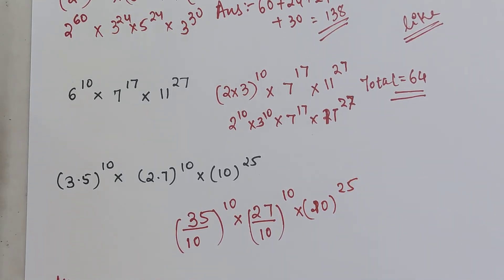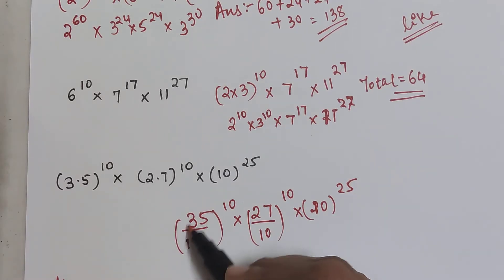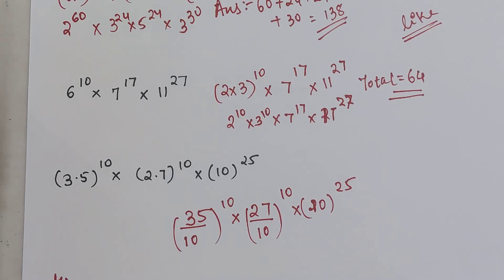So now here please understand, if you want to cancel you can cancel, but it will lead to some negative indices as well. Why am I saying this is because we have 10 and 10 over here, and in the numerator also we have something in 10s. So let's keep the 10s as it is.